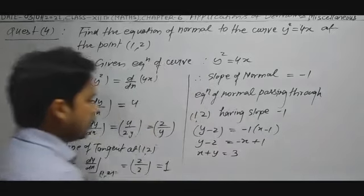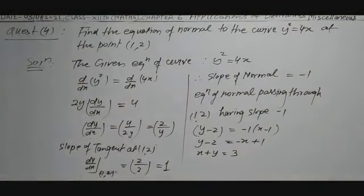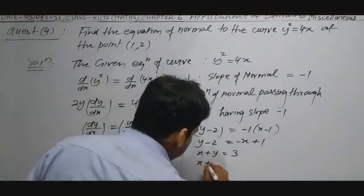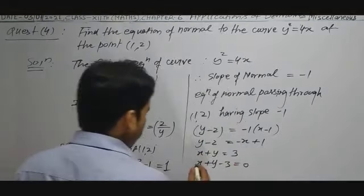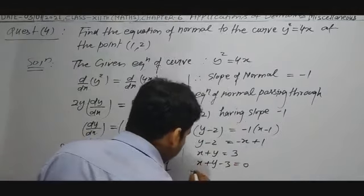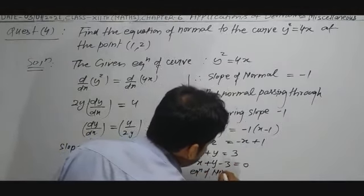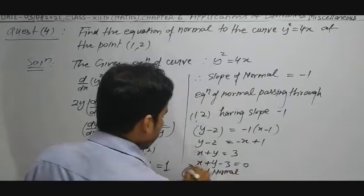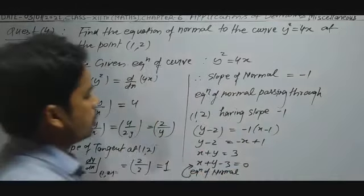This is the equation of normal: x + y − 3 = 0. This is the answer.